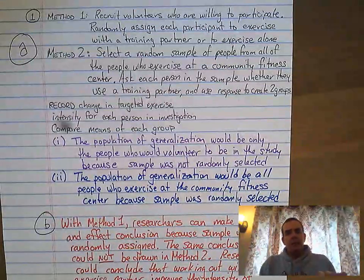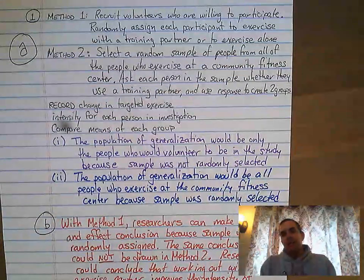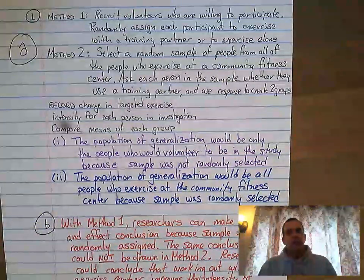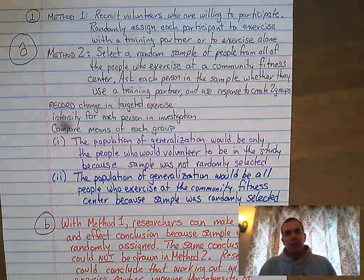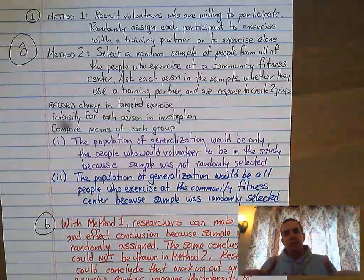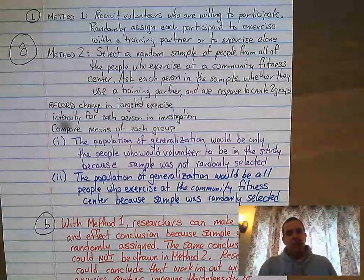The big difference to remember is: randomly selected relates to an observational study, and randomly assigned relates to an experiment. In this case, they're talking about the initial gathering of the group — not the results yet, just how we can draw conclusions. Since we're talking about random selection, that's when we can make assumptions about the population from which we picked the people.